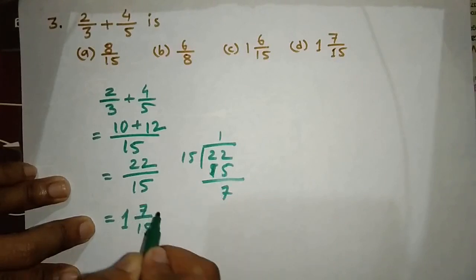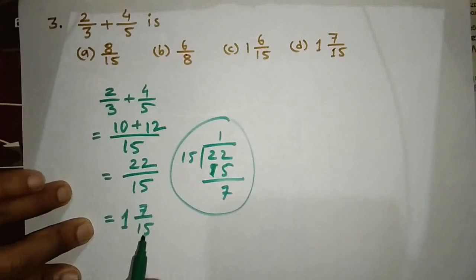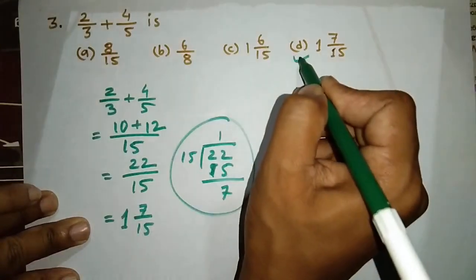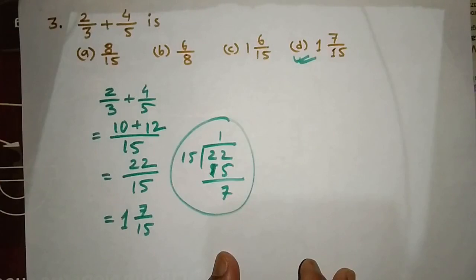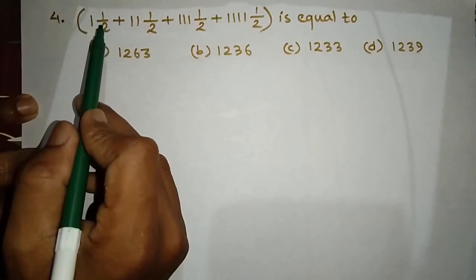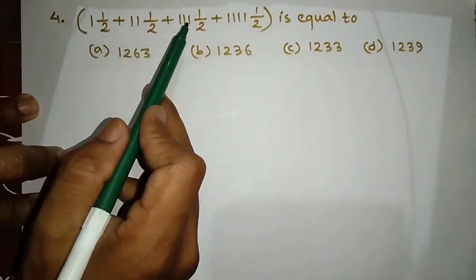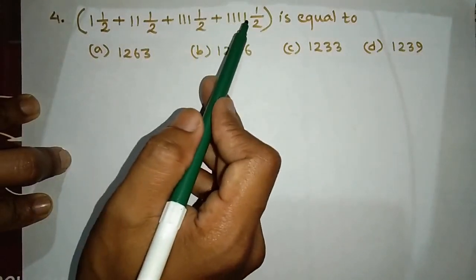When you are looking at this number — 1 and 7 by 15 — you can see the number clearly. All you want to reach is 1 and 1 half, plus 1 and 1 half, plus 1 and 1 half, plus 1 and 1 half.